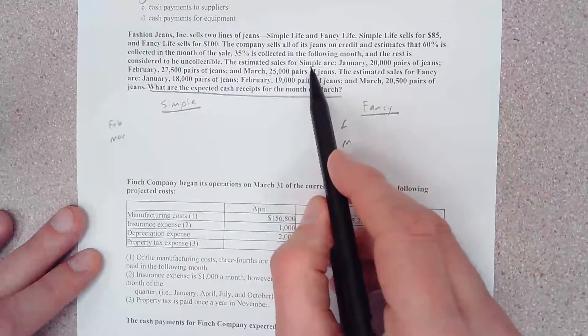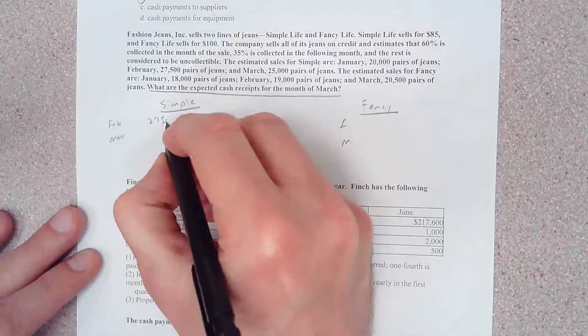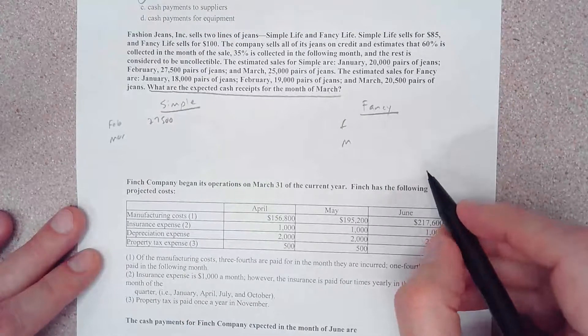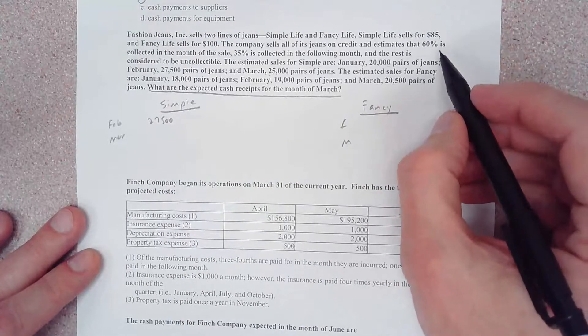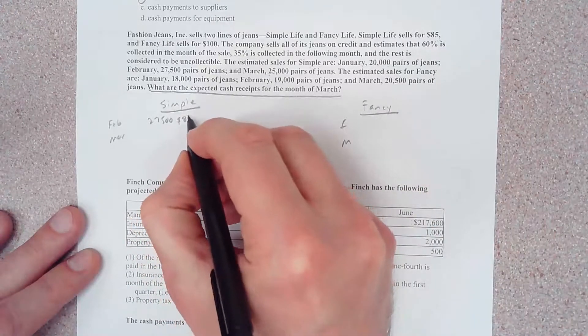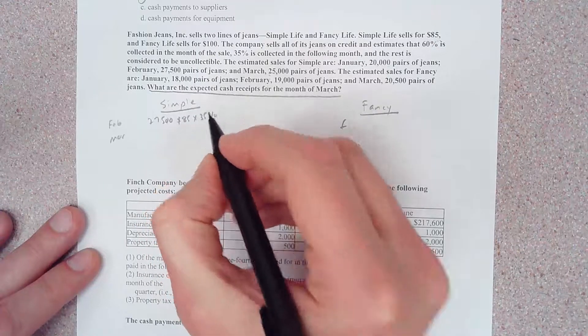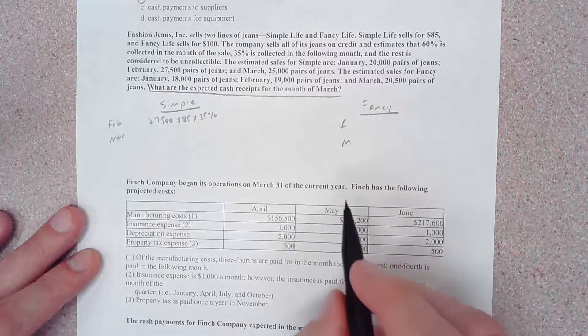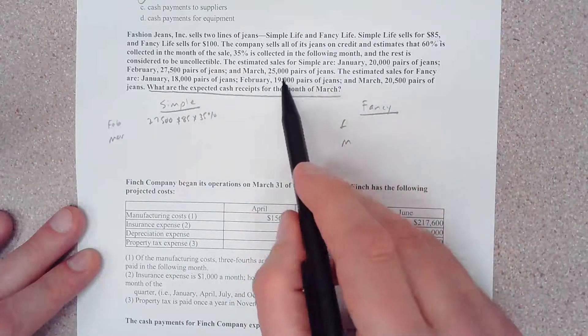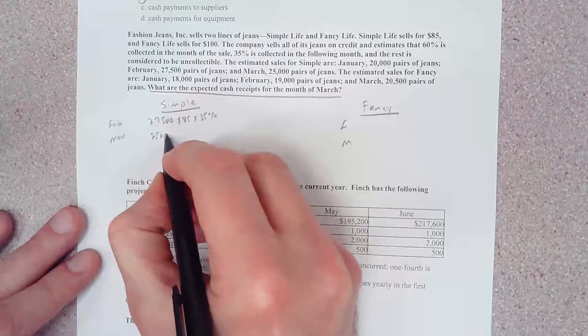Let's see here, 27,500 pairs of Simple jeans in February. We need to figure out cash. It doesn't look like we have any sales discounts, so we need to know what the price per pair of jeans is and then we need to know how much we're going to collect. We sold 25,000 pairs of the Simple in March.